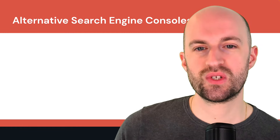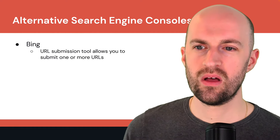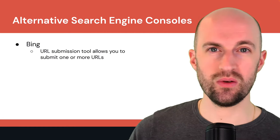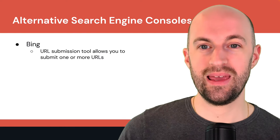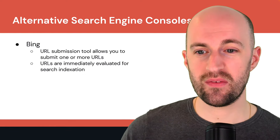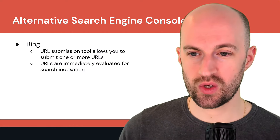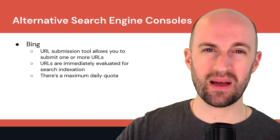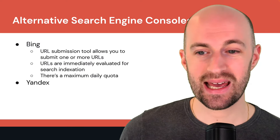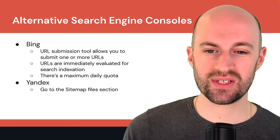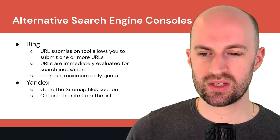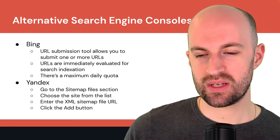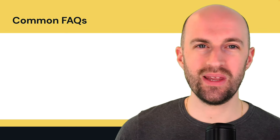There are alternative search engine consoles you can use. For Bing, you can use the URL submission tool to submit one or more URLs — they're immediately evaluated for search indexation, with a maximum daily quota for submissions. For Yandex, go to the sitemap files section, choose your site from the list, enter the XML sitemap file URL, and click the Add button to submit it.